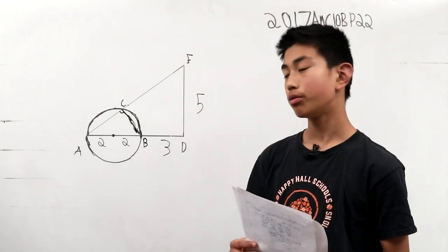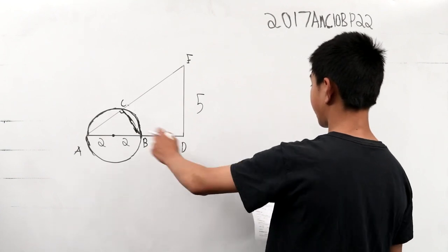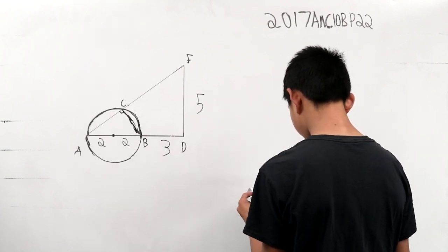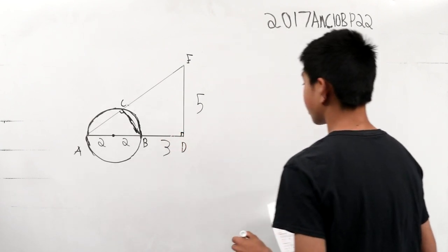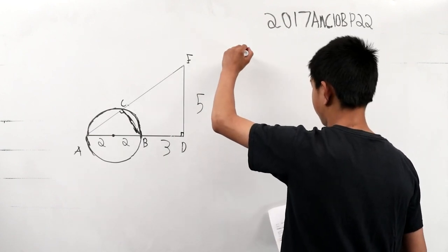Now what do we know? We can automatically find the area of triangle ADE, the big one, because we know that it's a right triangle since it's perpendicular. So this area is going to be, let's see...